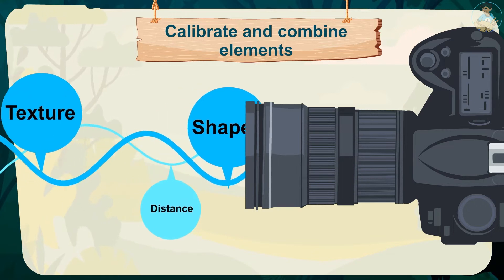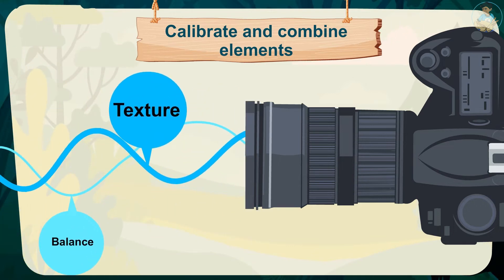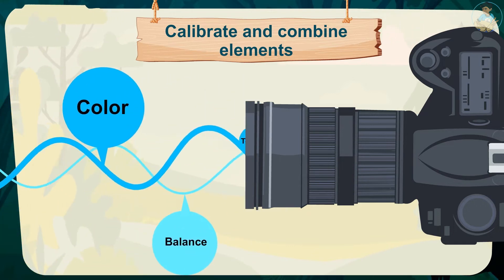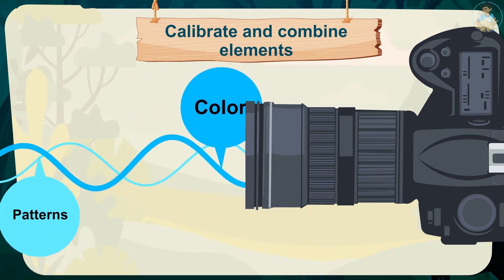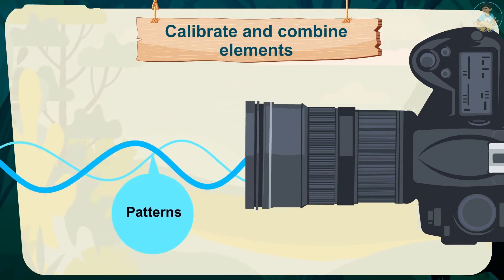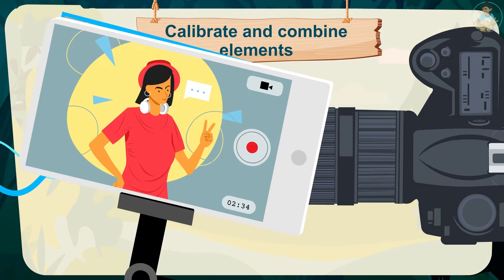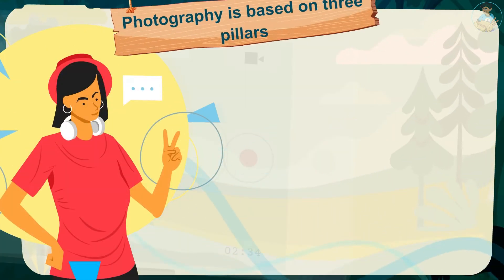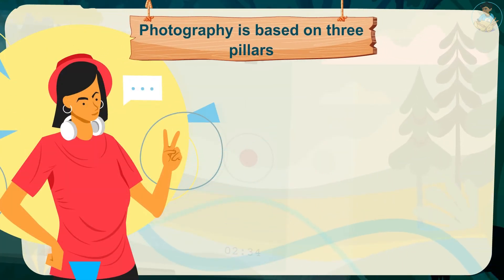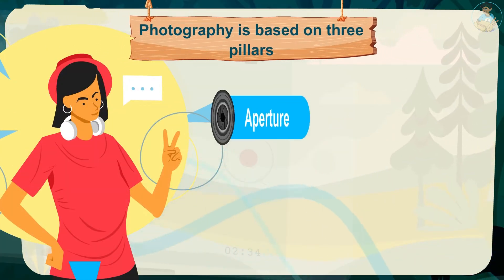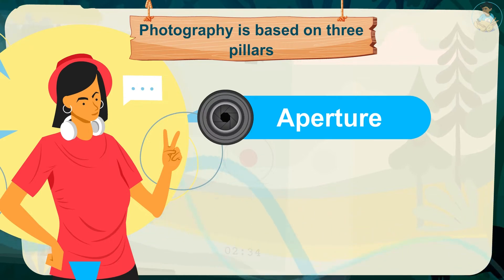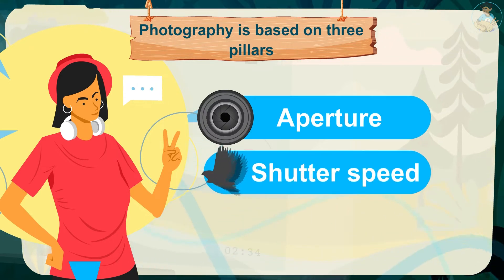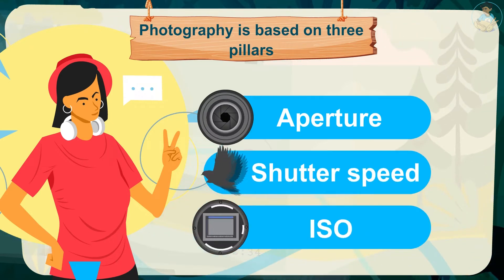The only trick for photography is to calibrate and combine these elements so that they work in harmony to record clear and recognizable images. In addition, photography is based on three pillars: aperture, shutter speed, and ISO.